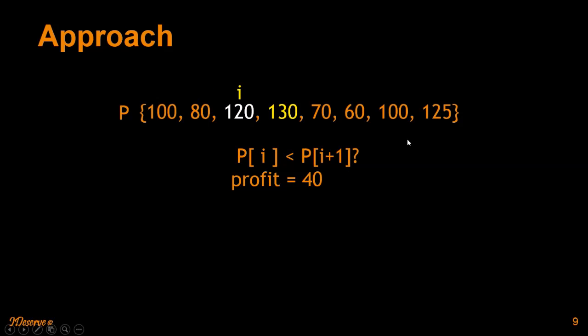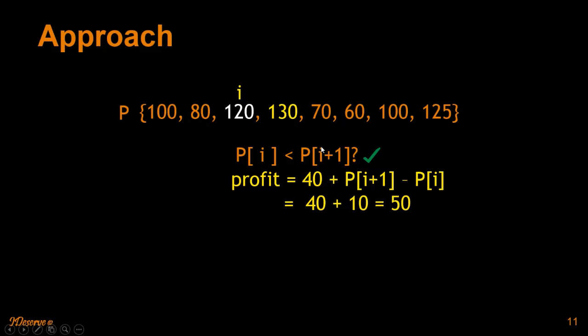Let's move forward to the next day. We have the stock price of 120. If we buy at this point and sell at 130, we'll definitely get a profit. We'll add that profit to the previous profit we had, so 40 plus 10, which is 130 minus 120. We get total profit of 50. The two pairs that we used is 80-120 and 120-130.